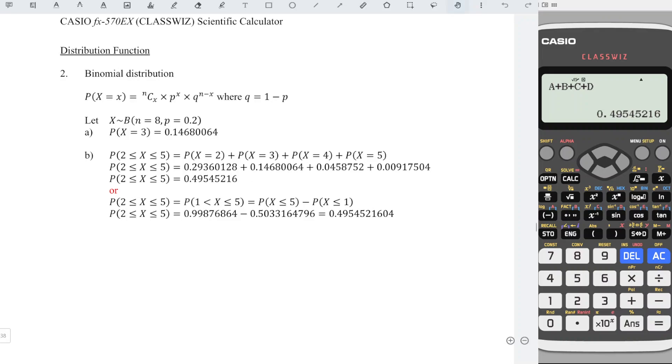Or the last method menu, look for the distribution, 7. Press down. Look for binomial cd, cumulative distribution.